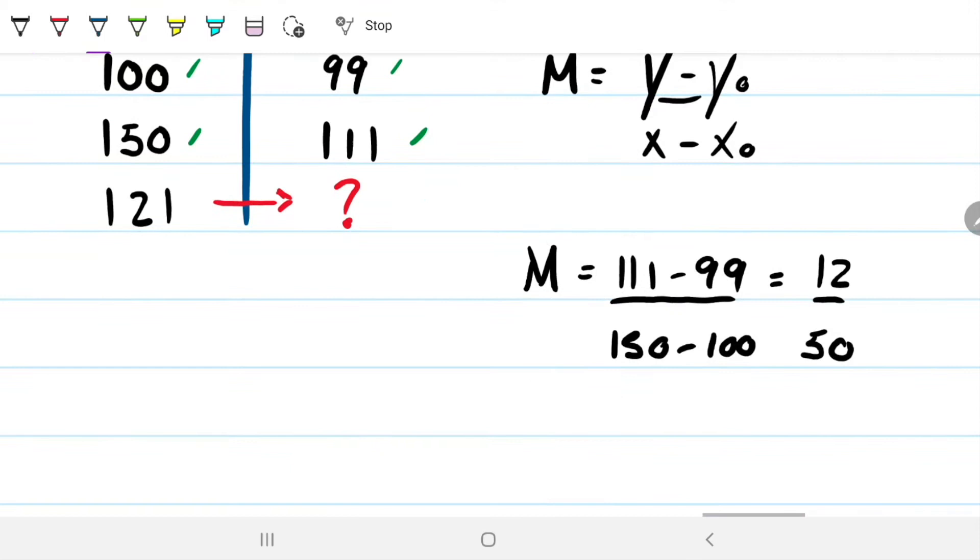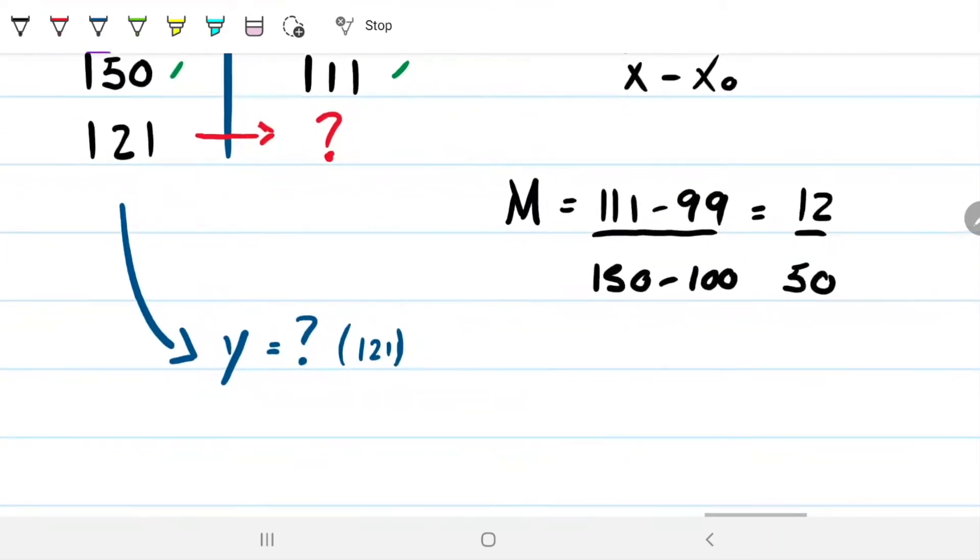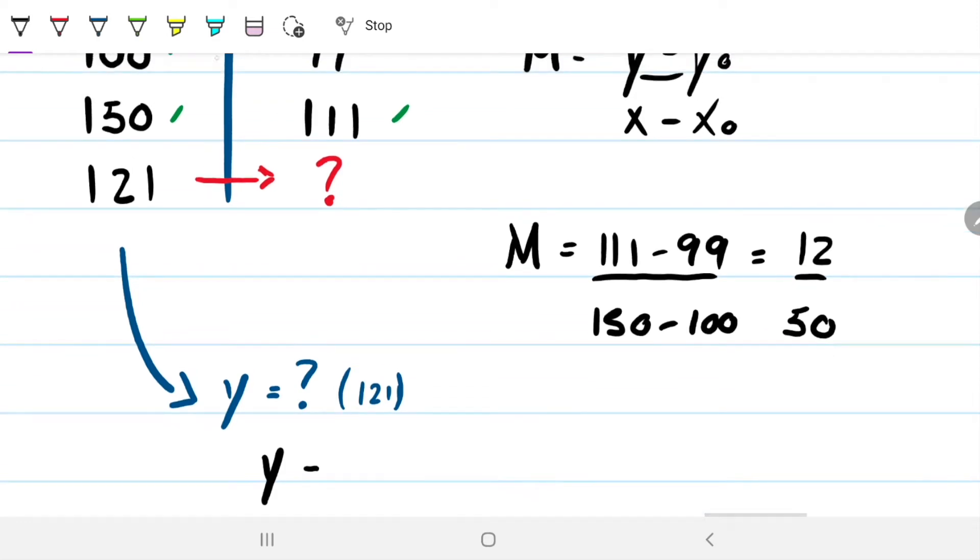Now, if I want to know my Y, a given Y, any Y in this case, Y for 121, then what do I need to do? I need to recreate this equation. So the Y that I'm looking for minus any Y, and I can choose the Y I want. I can do 111, that's fine, if I want to.